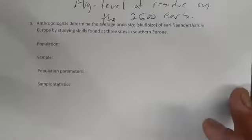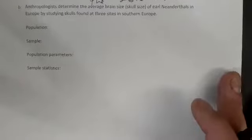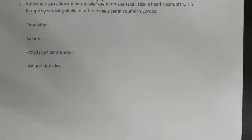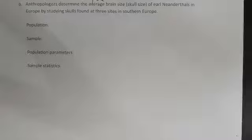One more example: anthropologists determine the average brain size of early Neanderthals in Europe by studying the skull size, examining skulls found at three sites in Southern Europe. The population is the early Neanderthals in Europe — that's the subject they're studying. Brain size or skull size would be the metric.